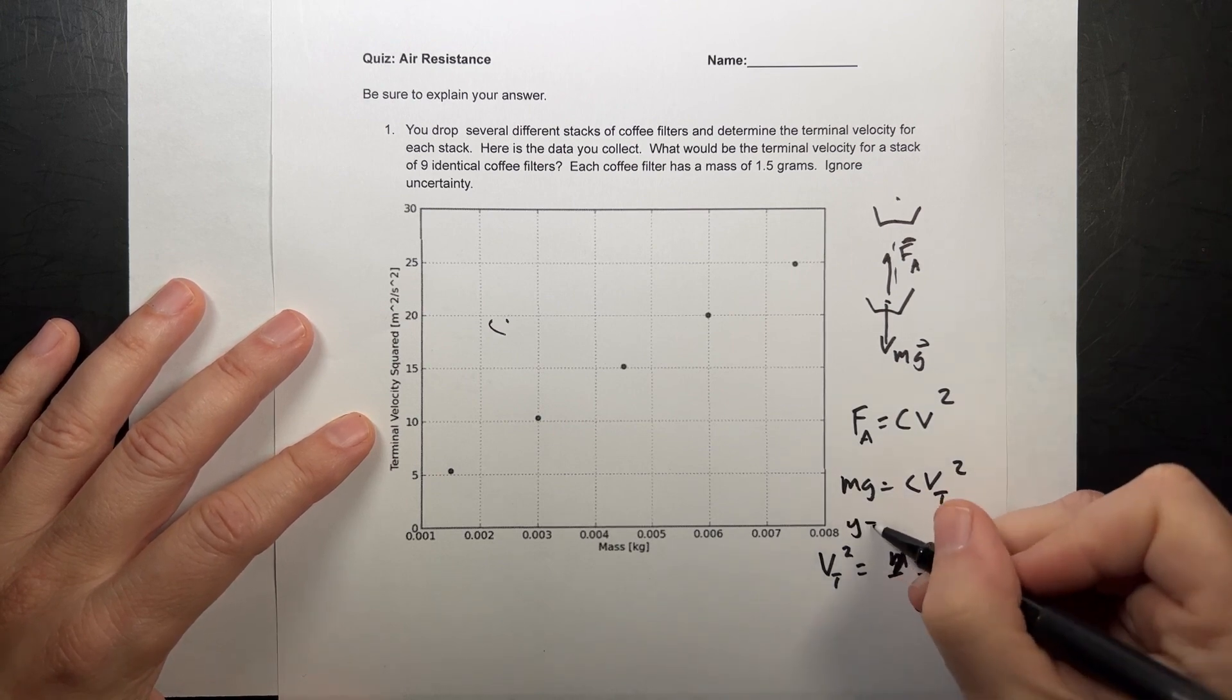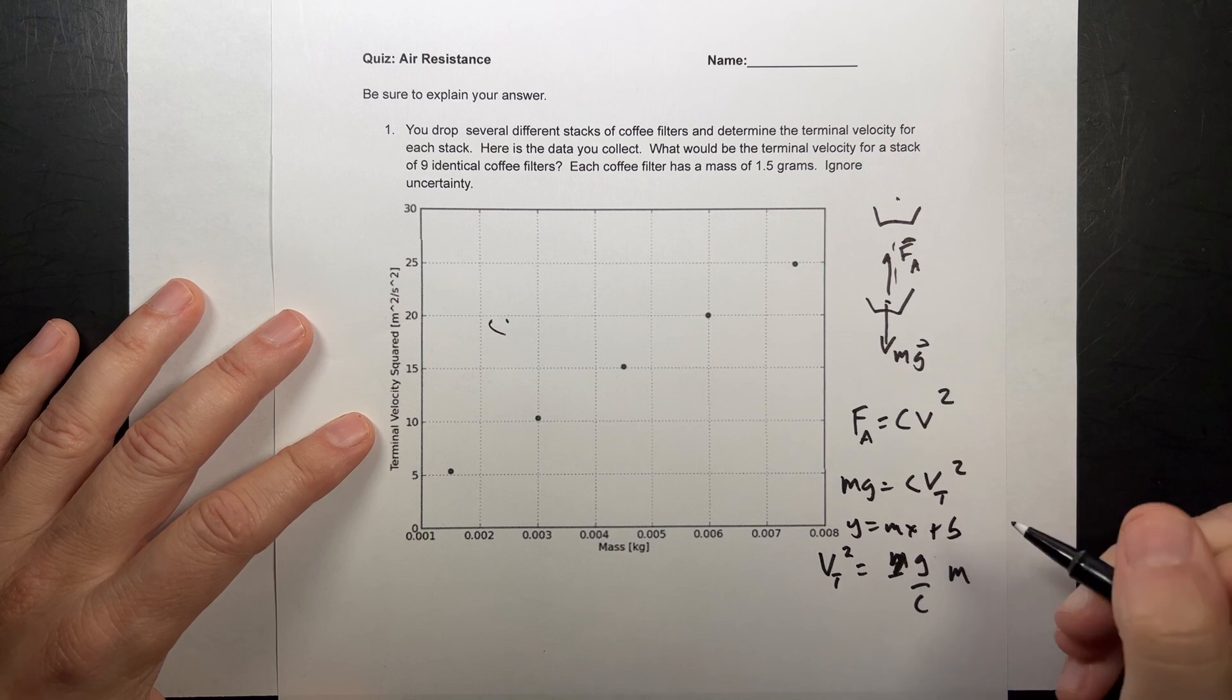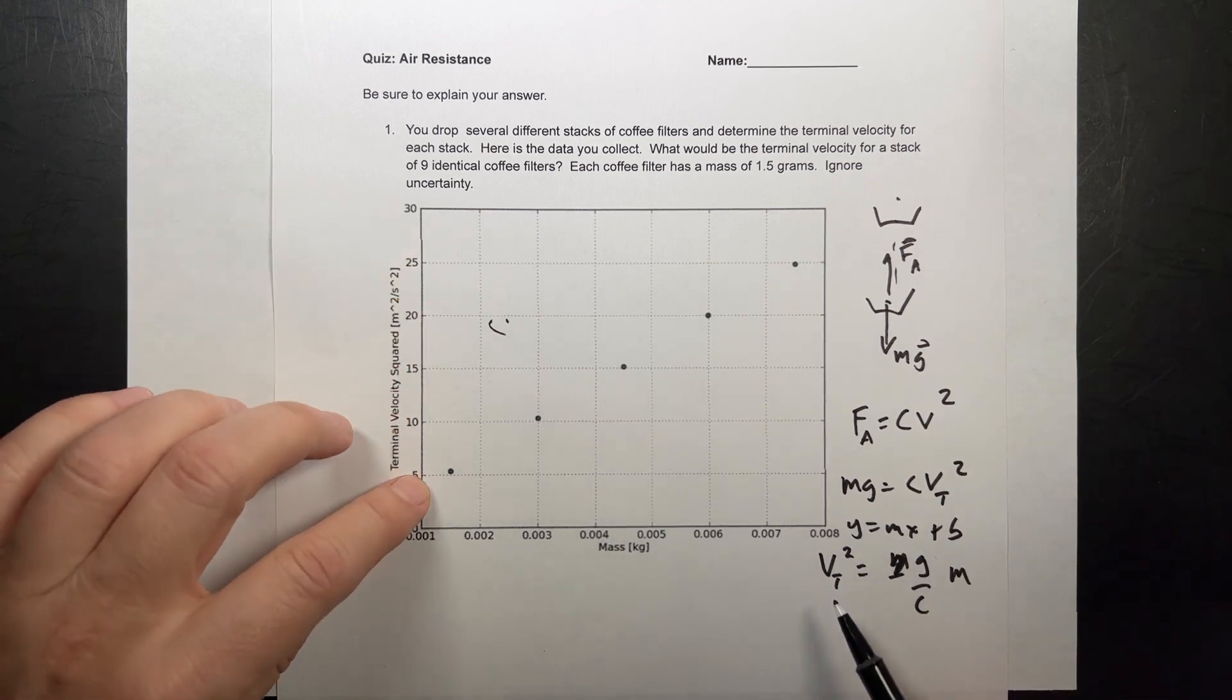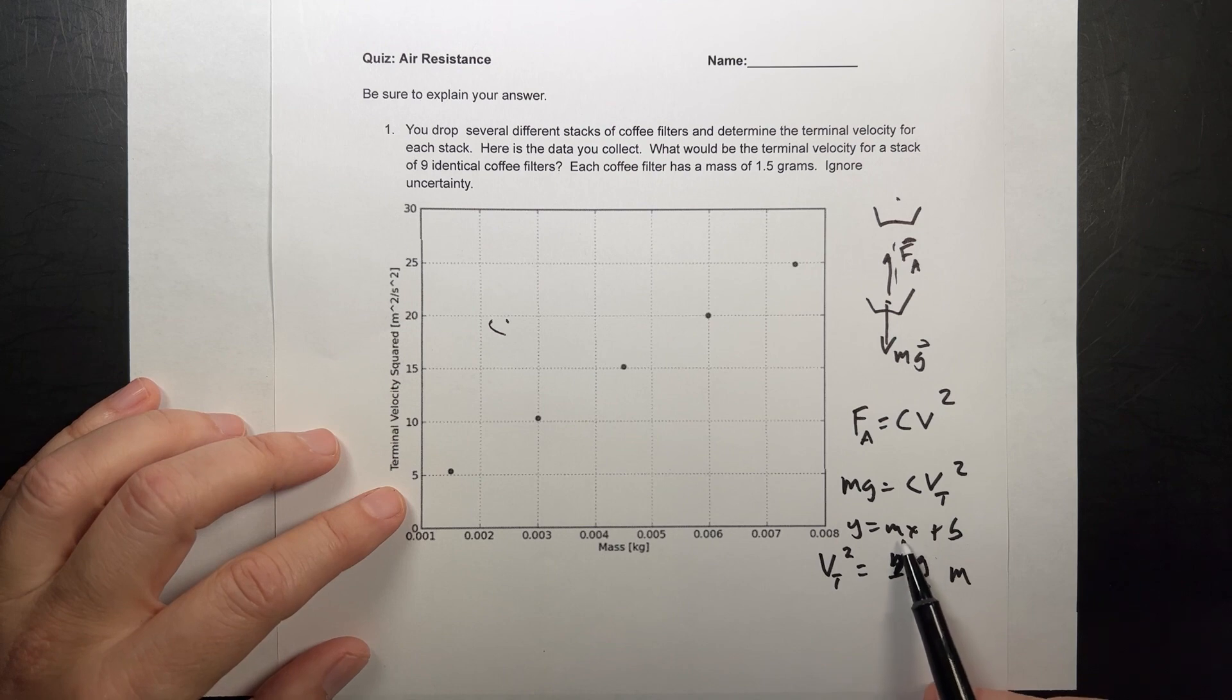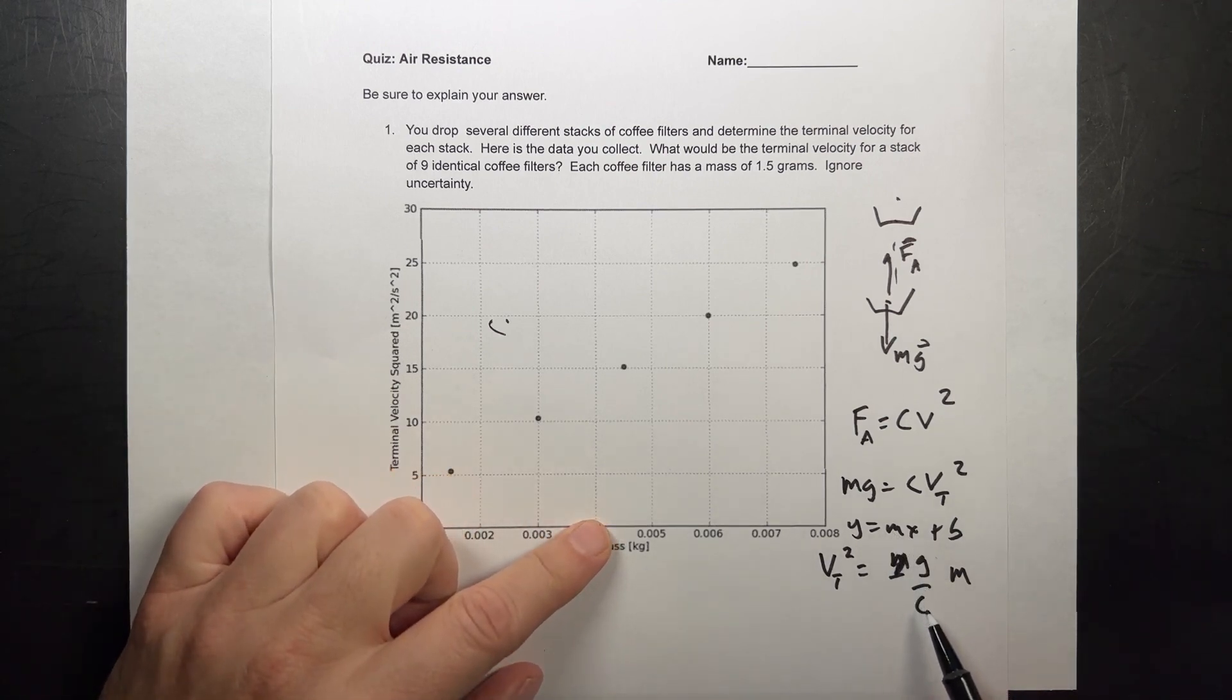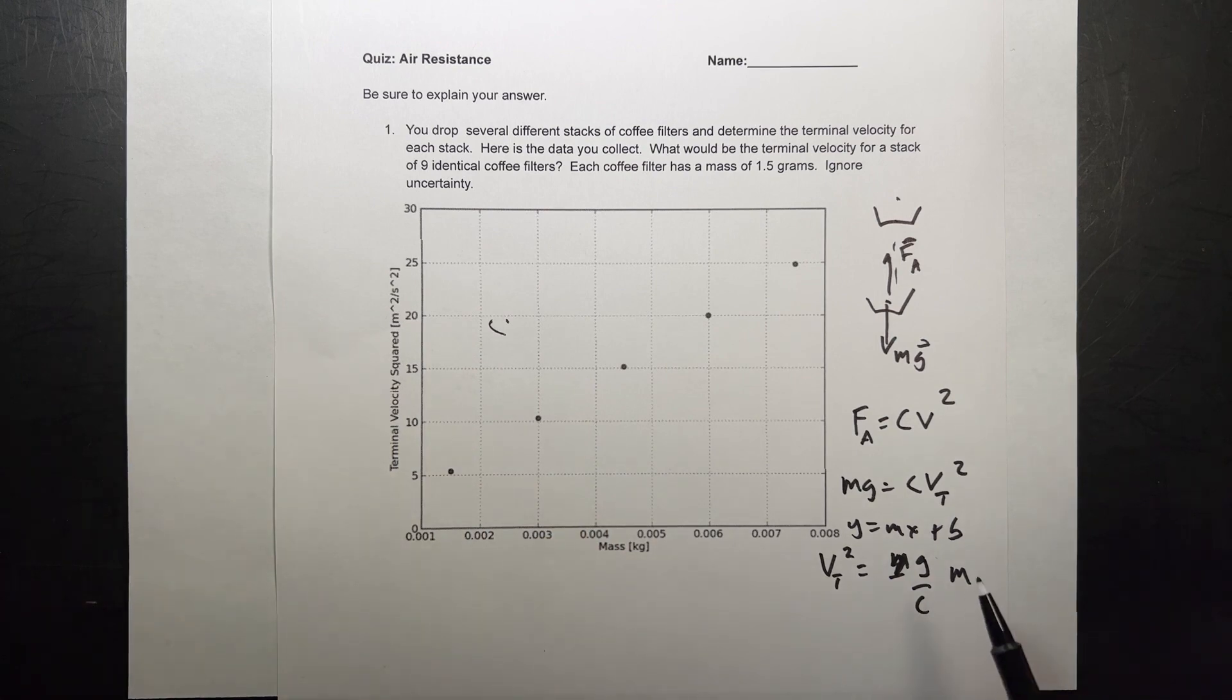And that looks like y equals mx plus b, right, the equation of a line. So if I plot V_T squared on the vertical axis, which I did, and mass on the horizontal axis, which I did, then the slope would be g over c. And then we can use that to find the terminal velocity for nine coffee filters.